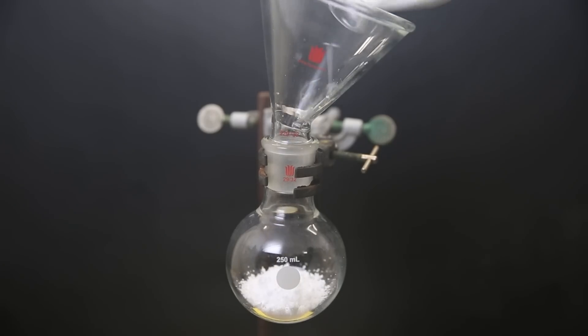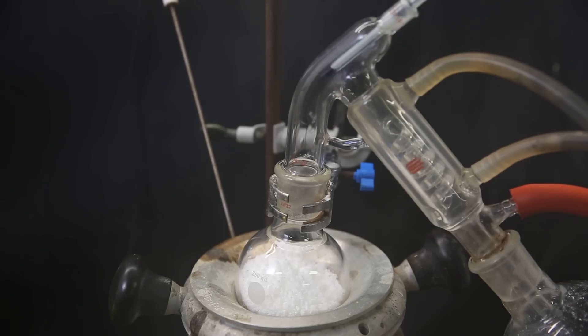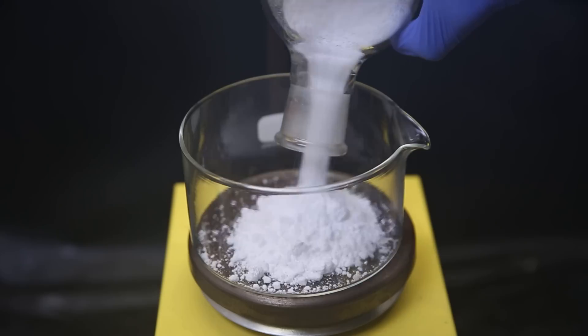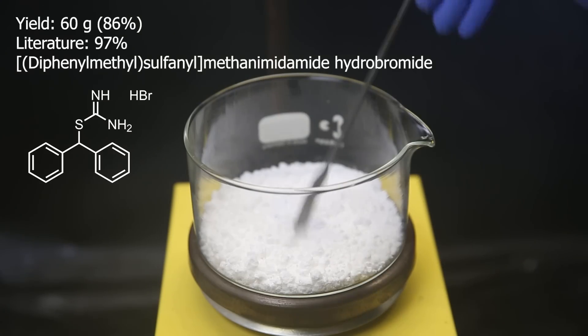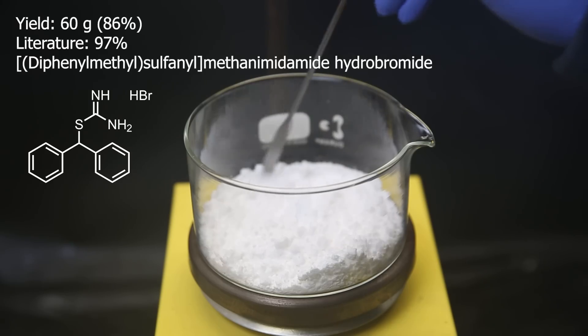So to dry it, I pour it all out into this flask, heat it lightly, and attach a short path distillation apparatus on which I pull a vacuum. I leave that overnight and it should pull out pretty much all of the water that is inside. When that's done, it is a dry powder that can be poured easily, in the end leaving me with 60 grams of the first product, which is a fair yield of 86%. Now that this part is finished, I set it aside while I prepare the second required reagent.